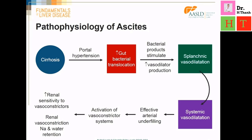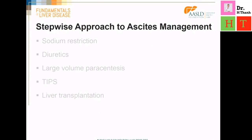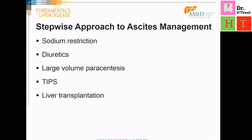Therefore, a patient with cirrhosis and ascites has an increased total body sodium and water. The mainstay of treatment is sodium restriction. The stepwise approach to ascites management is sodium restriction followed by diuretic therapy. And if sodium restriction and diuretic therapy are not sufficient to eliminate the ascites, the patient will be assessed for second-line therapies such as repeat large volume paracentesis, the insertion of a TIPS, or consideration for liver transplantation.